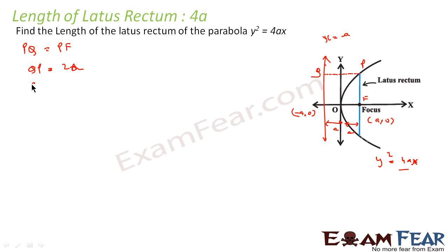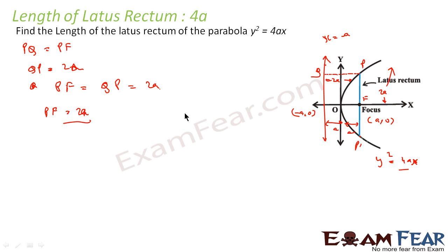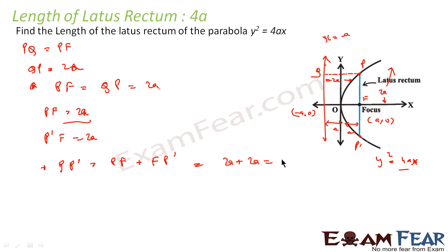Since PF = QP = 2a, and by symmetry of the parabola about the x-axis, P'F is also equal to 2a. The latus rectum is the segment PP', so its length is PF + FP' = 2a + 2a = 4a. Therefore, the length of the latus rectum is 4a.